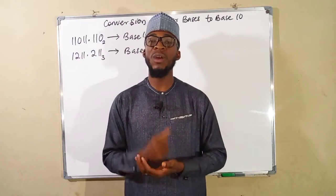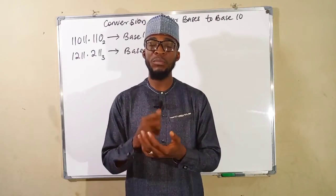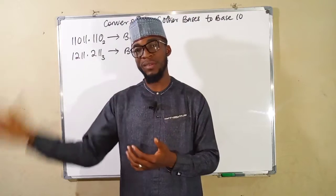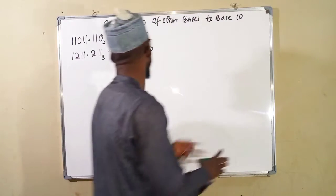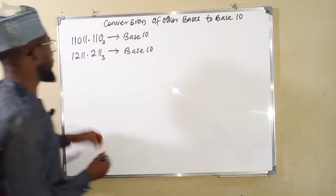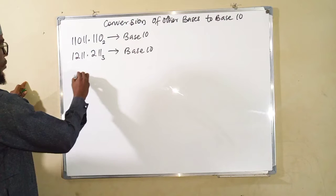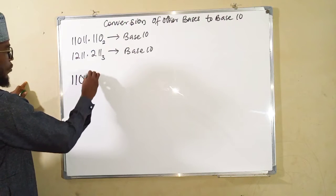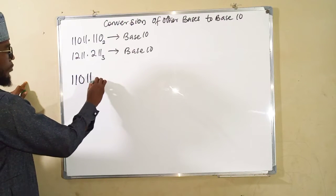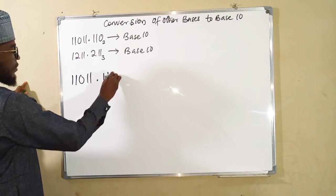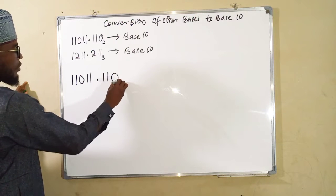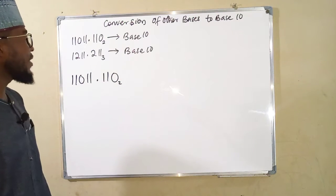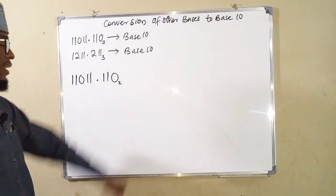In this tutorial we are going to see how to convert numbers that contain a decimal point to base 10. The first one we have is 1 1 0 1 1 point 1 1 0, and all these numbers are in base 2. We want to convert them to base 10.